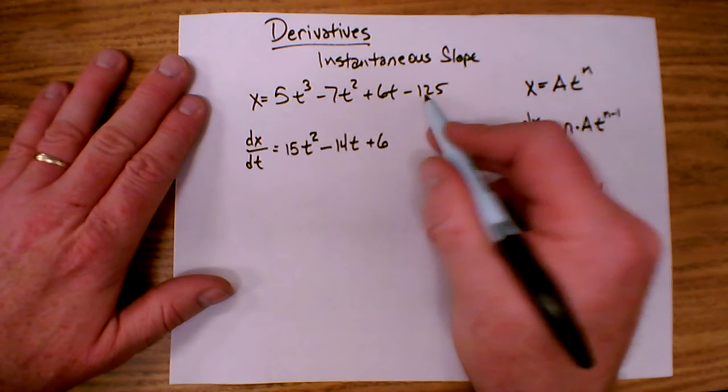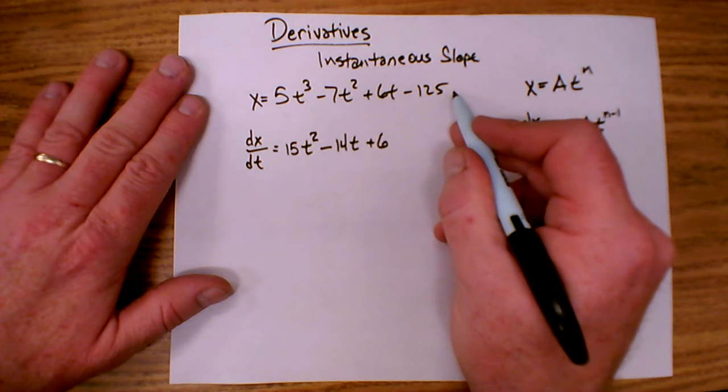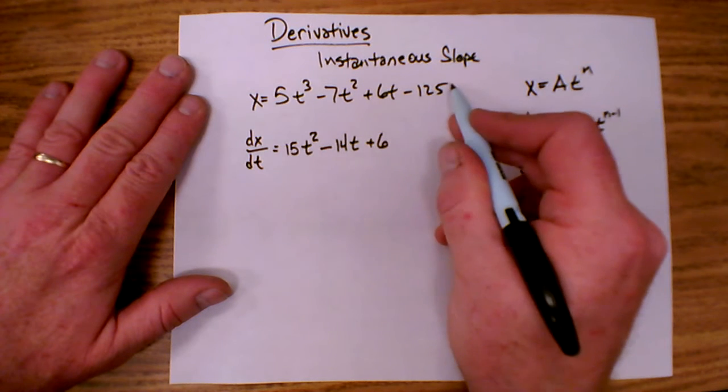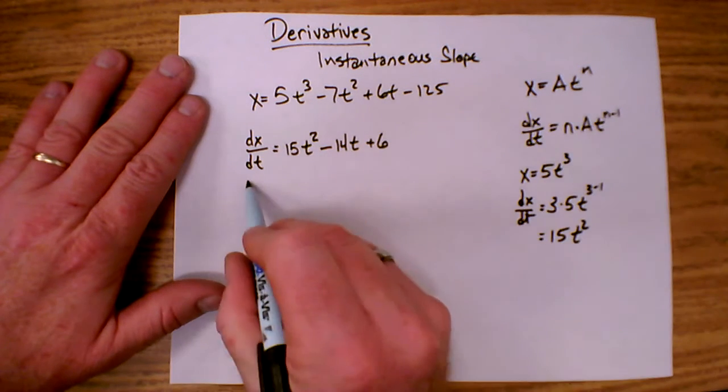And the derivative of a constant—remember a constant is like having a t to the 0 power here—so that 0 down in front makes that 0. This is the derivative.